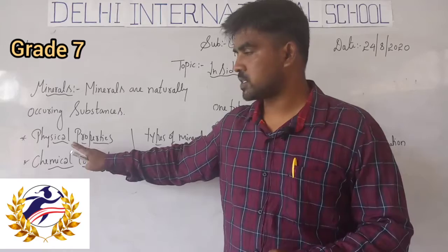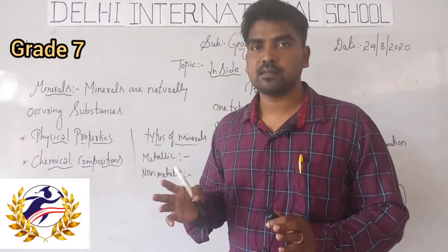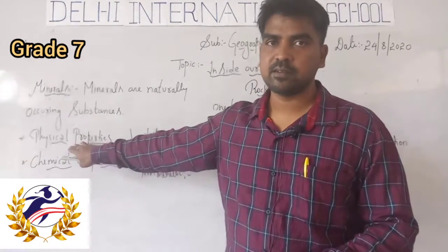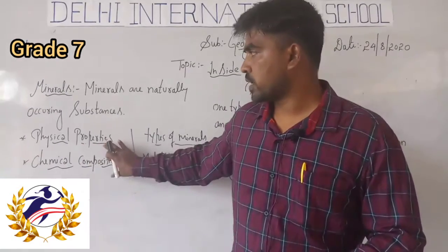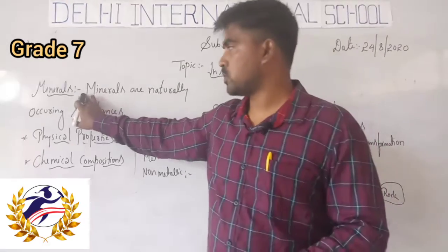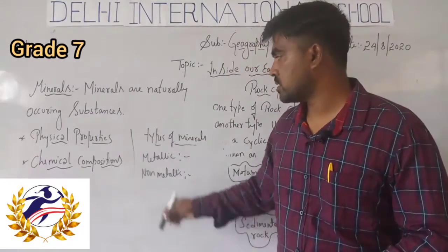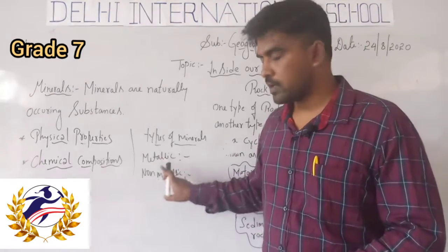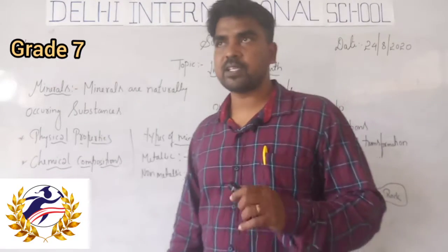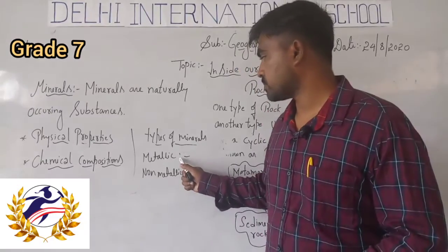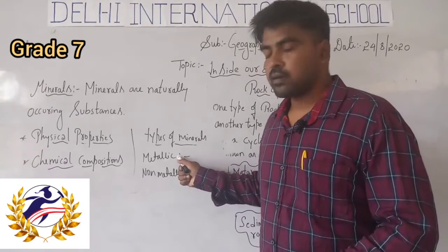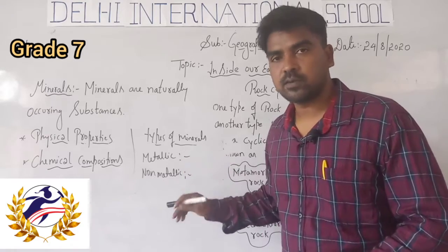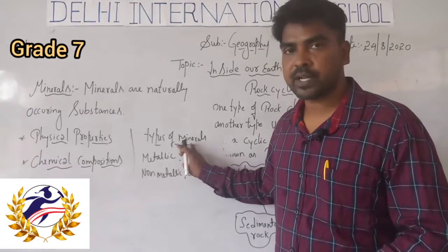Physical properties refer to breaking due to certain conditions or natural calamities. These are the two characteristics of minerals. Minerals are naturally occurring substances, categorized into two types. Examples of metallic minerals are iron, copper, aluminium, and bronze.